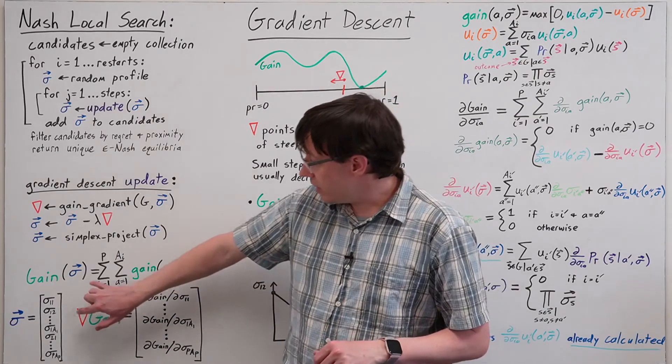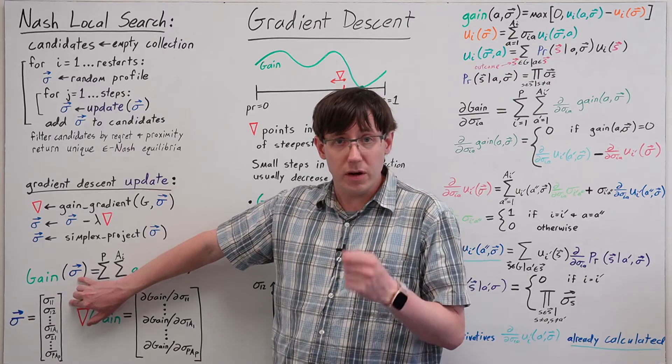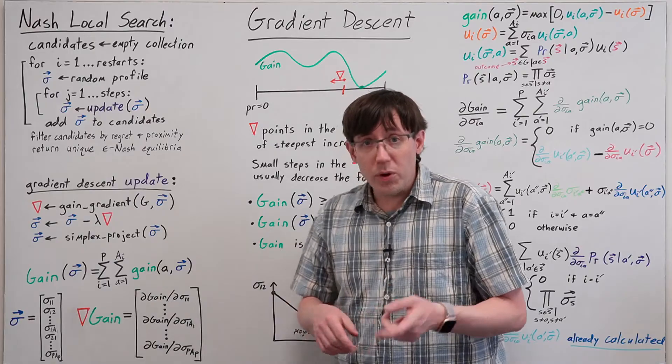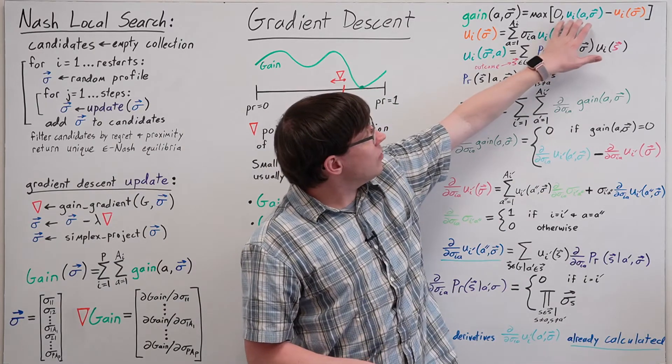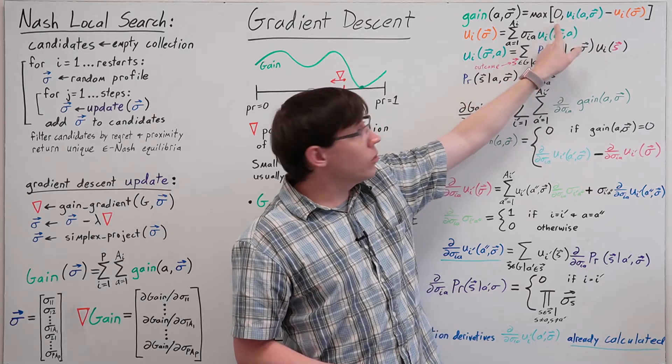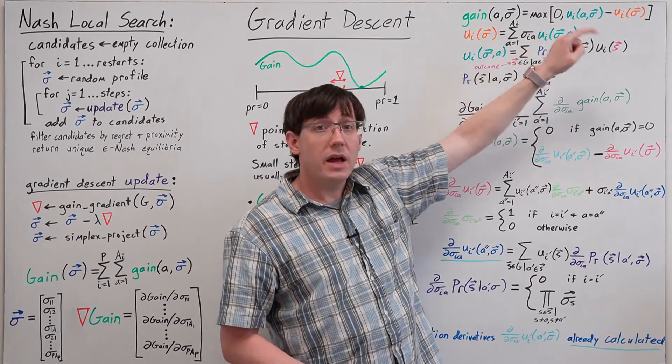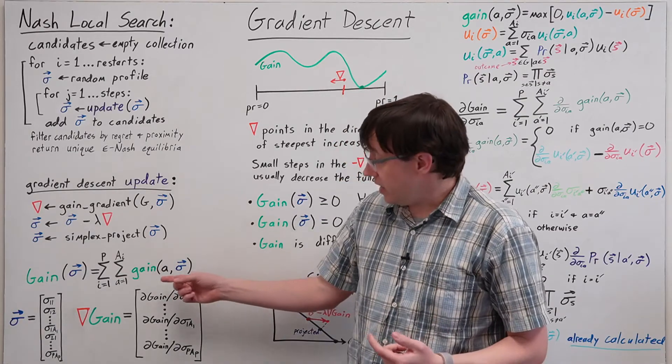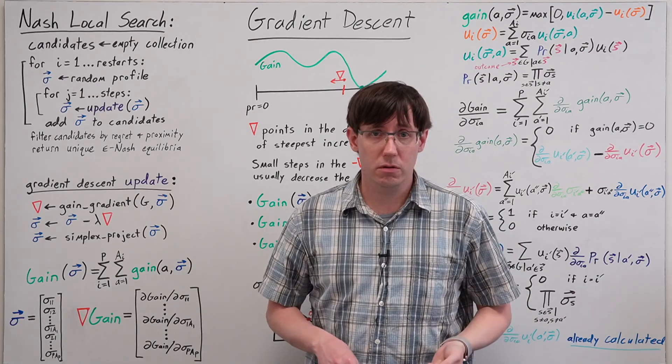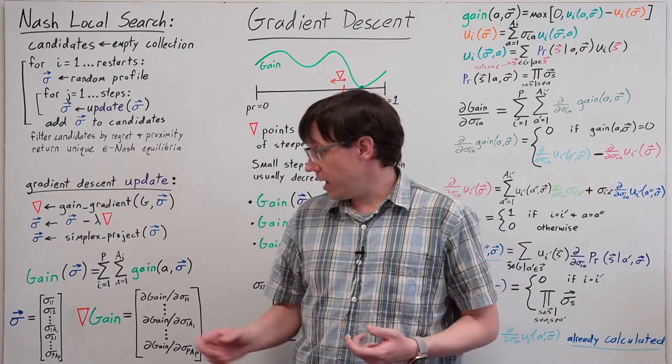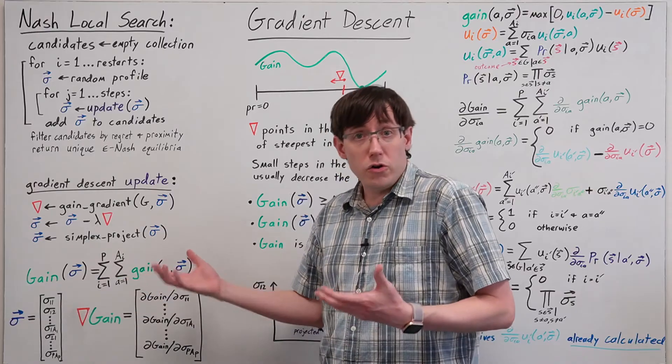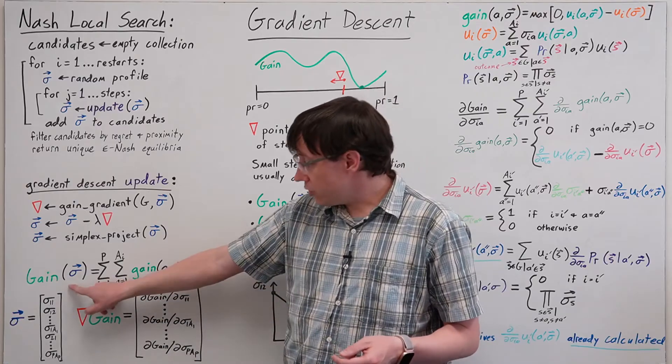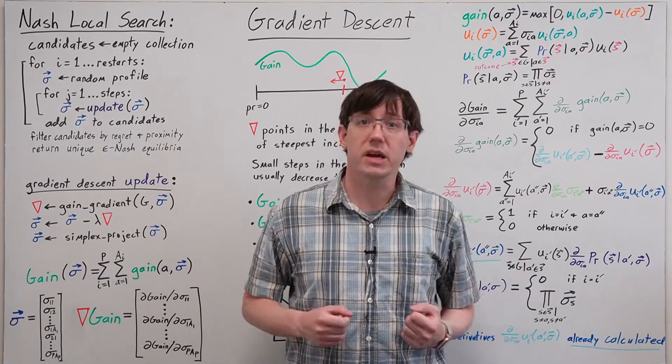This gives us a function that takes a mixed strategy profile as input and outputs a single number. That output can never be negative because each of the individual action gains gets floored at zero. The only way for the total gain to be zero is if all of the individual action gains are zero, which would mean that from this profile there are no beneficial deviations. So for any profile where total gain is zero, that profile must be a Nash equilibrium.